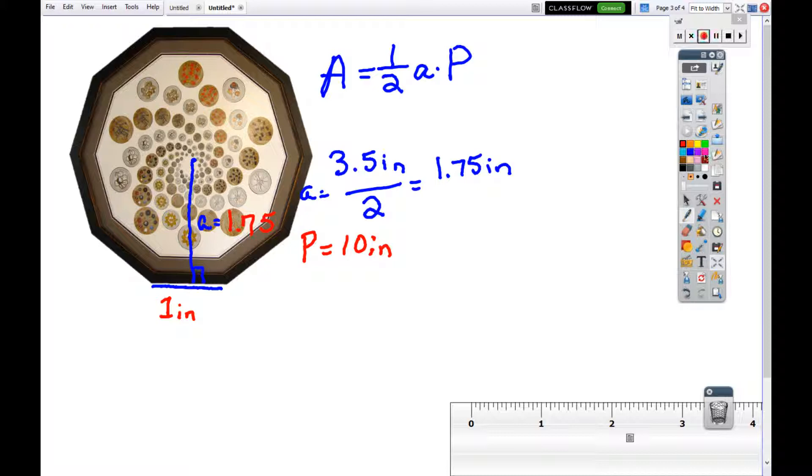If we look at our formula once again, our area A is equal to one half our apothem, which we found to be 1.75 inches, times the perimeter, which we got 10.